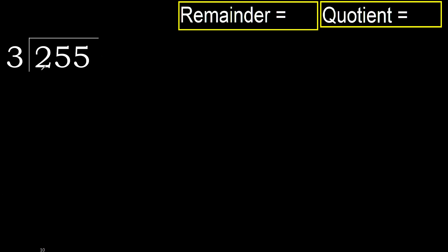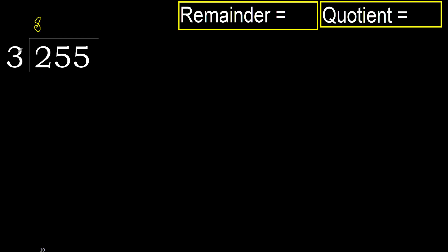255 divided by 3. 2 is less, therefore next. 25 is not less. With 25, 3 multiplied by which number is nearest — but not greater? 3 multiplied by 9 is 27, which is greater. 3 multiplied by 8 is 24, which is not greater. 25 minus 24 is 1.